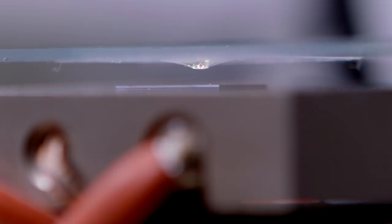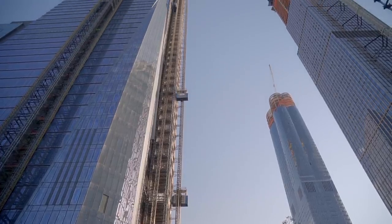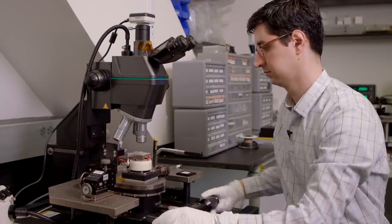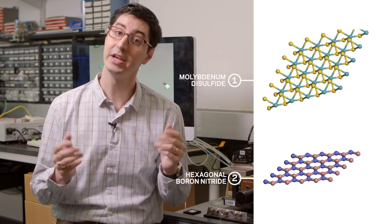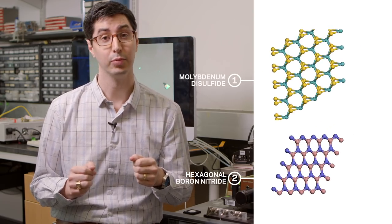In this video, we're going to show you how we build a structure layer by layer from these materials. Today, we're building a nanomaterial stack of atomically thin 2D materials. The 2D materials that we're building with are semiconducting molybdenum sulfide and insulating hexagonal boron nitride.